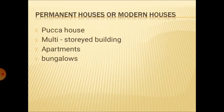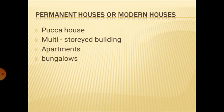Now let's discuss permanent houses or modern houses. These houses are built using pucca material like cement, stone, iron, and wood. They may be big or small, simple or multi-storey buildings. In city areas where land is less, people construct multi-storey buildings with many apartments. People mostly live in two or three bedroom flats or apartments. Bungalows are constructed by rich people — they need larger space, are huge in size, have lawns and parking space, and are very expensive.